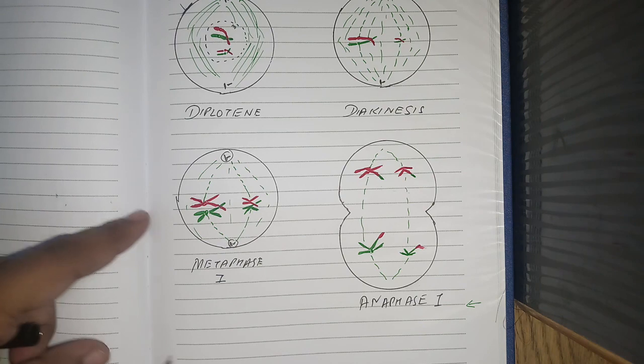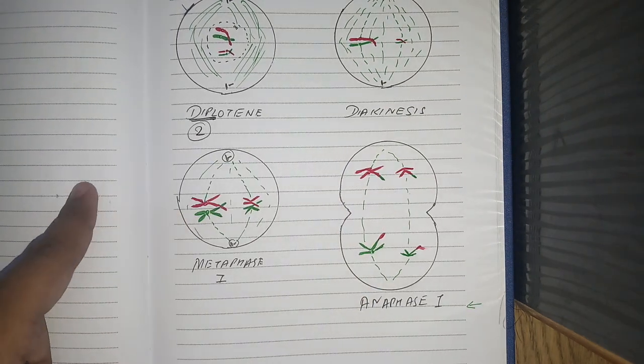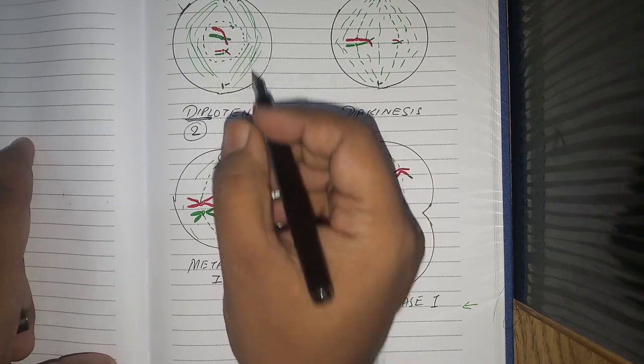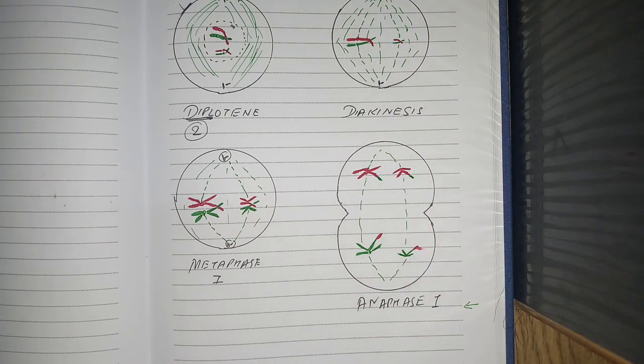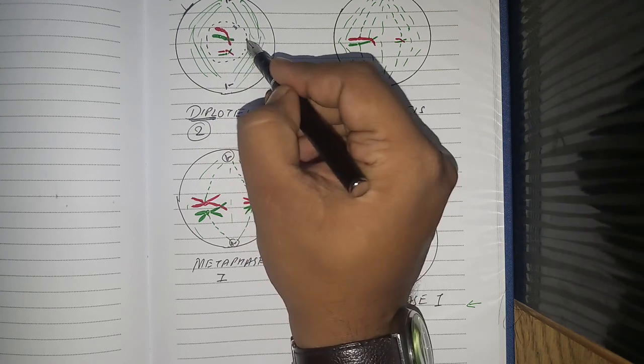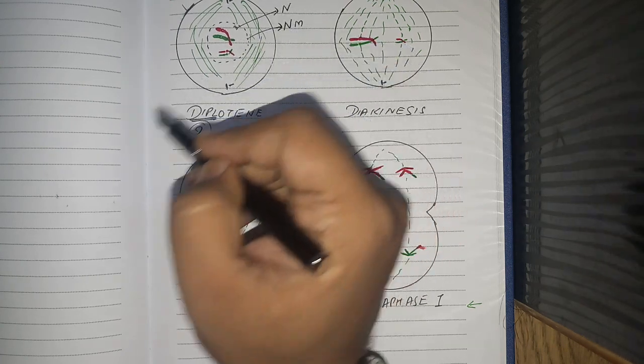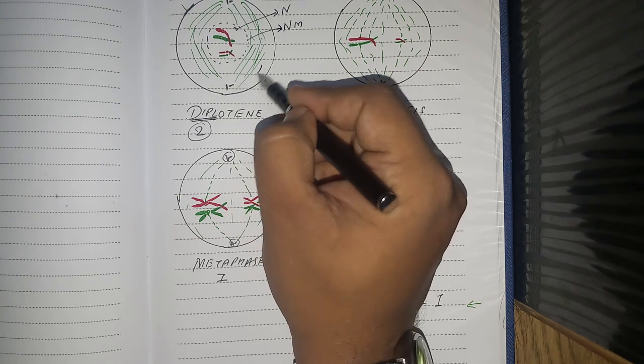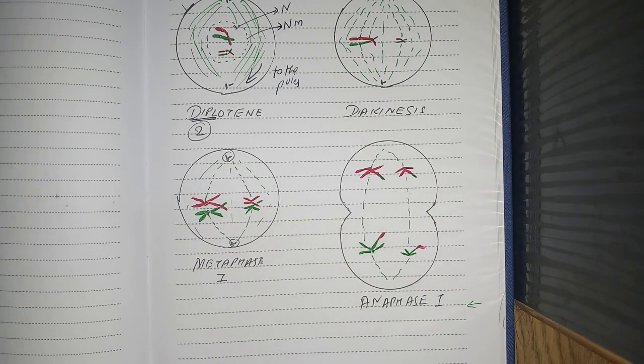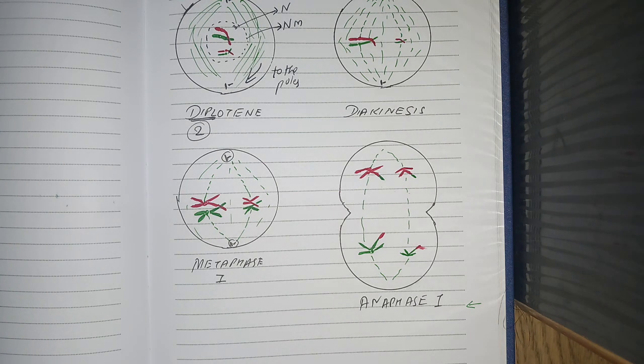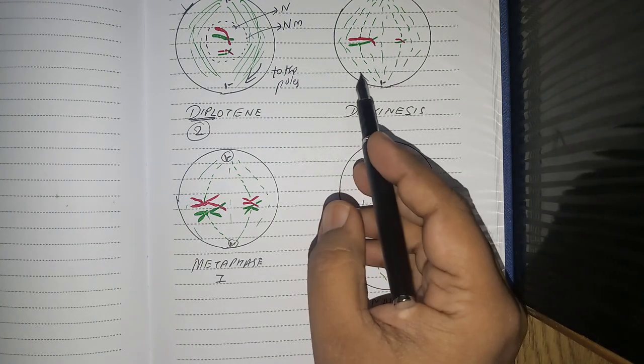The next stage is diplotene. Diplo means two. What happens here is the chiasmata—the non-sister chromatids—start to repel each other. The nuclear membrane and nucleolus start to disappear. The centrioles also get to their poles. But remember that even though they start to repel each other, they don't leave each other. Terminalization is there. They start repelling, but they don't leave each other.